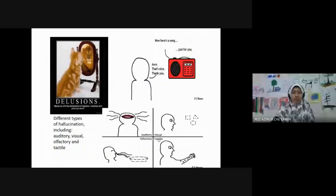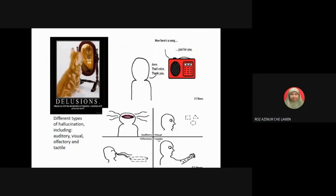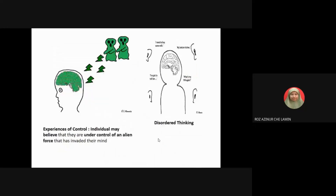This diagram shows how delusions can happen in schizophrenia. For example, a patient can see a cat in the middle but believes it is a lion. When they hear a radio on air, they think the DJ is talking directly to them. Some patients may also experience the feeling that they are being controlled by aliens, or hear someone whispering telling them what to do.